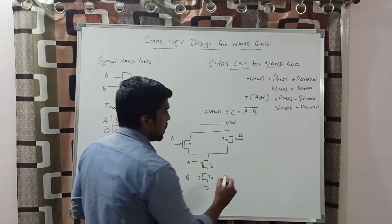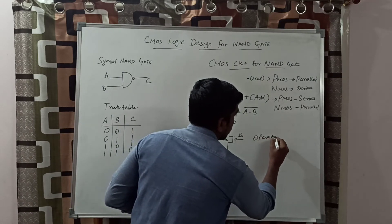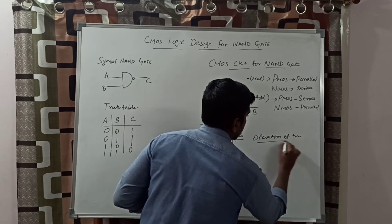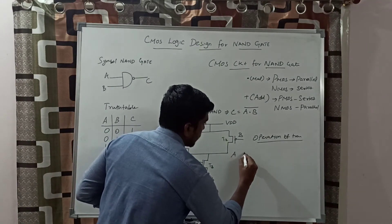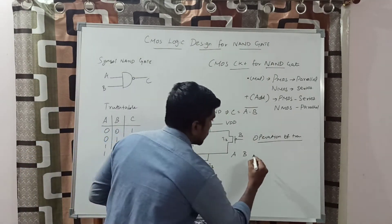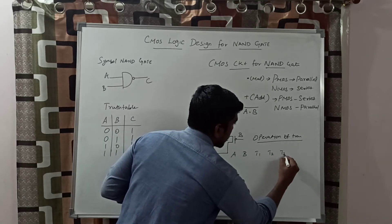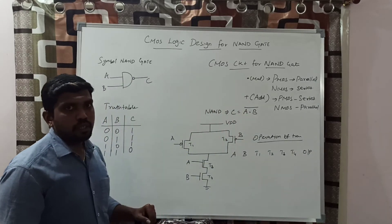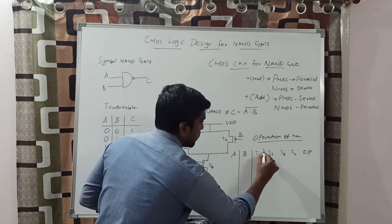Now we check the operation of the transistors. The inputs are A and B, using 4 transistors T1, T2, T3, and T4. The final node is the output. We assign the input values to check each case.